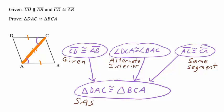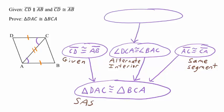One important detail that is actually missing from our proof is that alternate interior angles are only congruent when you have parallel lines. So we need to point out that we know those line segments are parallel, and the reason we know that is it was given to us. Now our proof is complete.